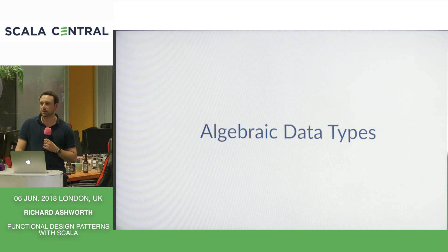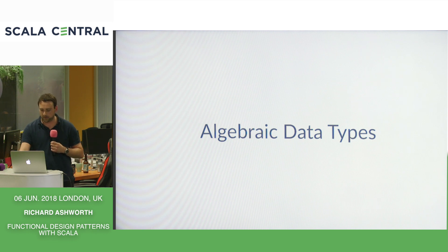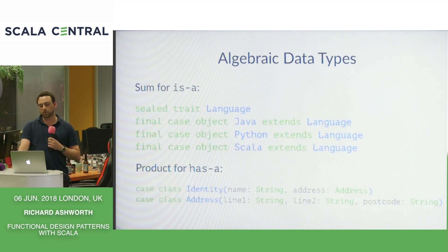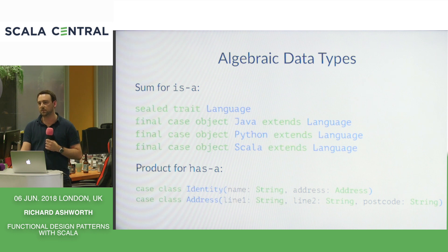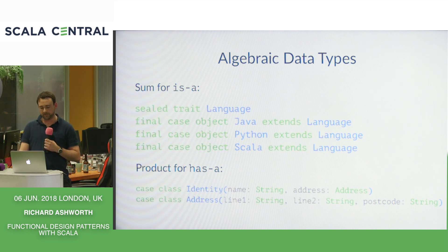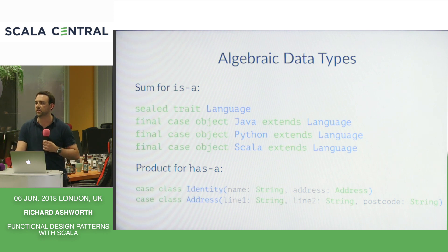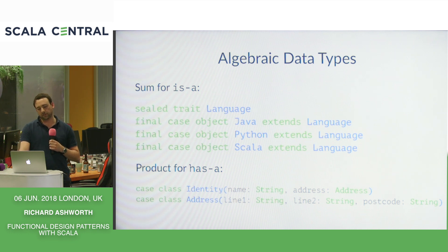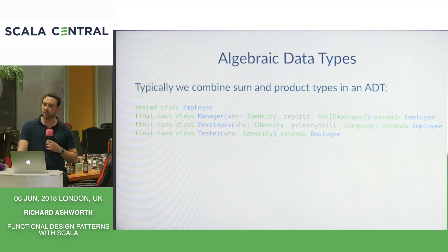The first pattern you'll come across as a Scala developer is algebraic data types. I'm sure everyone here is familiar, so we'll skip over explaining these in too much detail. Algebraic data types help us model sum and product types. For example, we can say that a Language is the disjunction or sum of Java, Python, and Scala. And we can use product types to say an Identity has an Address, which in turn might have a postcode.